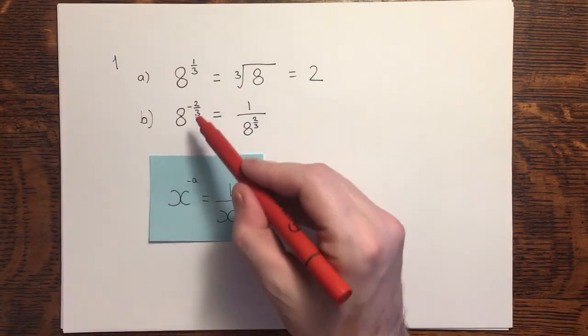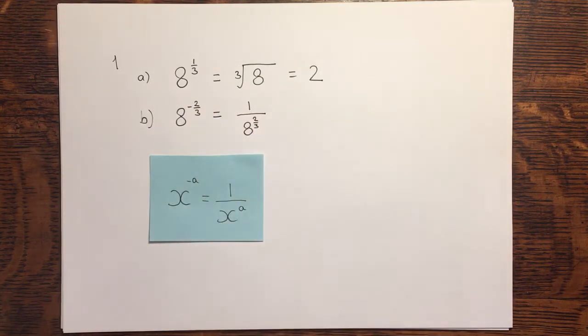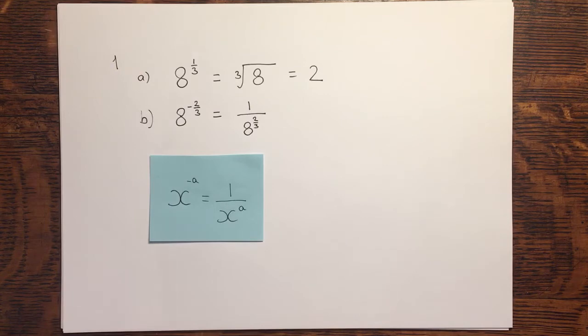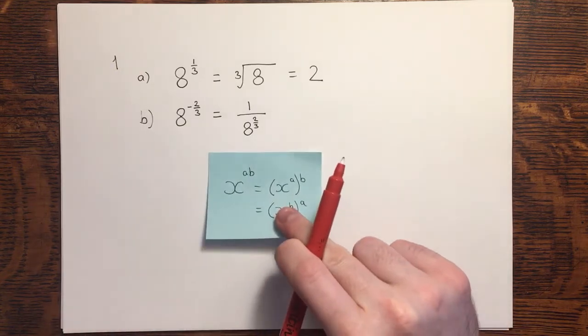A common error is that people retain this negative even when I'm having applied its effect of putting it onto the denominator of the fraction. The next rule to apply is this one here.